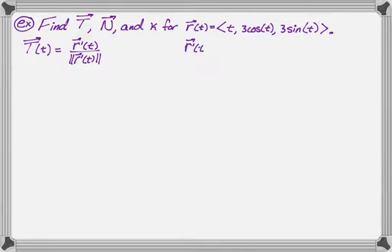So r'(t), you just go component by component. So one, negative three sine of t, and three cosine of t. So that's r'.